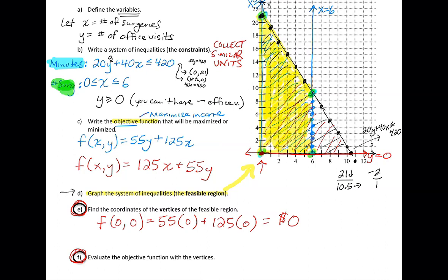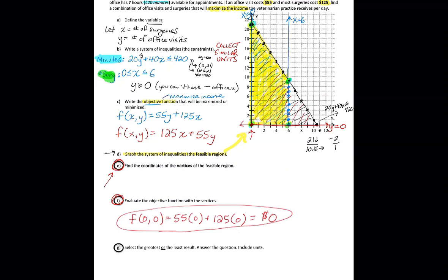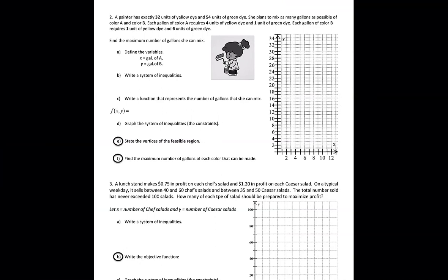As you try this, I'd like you to do question E — figure out those vertices and then evaluate the objective function at each. Then do question F to actually answer the question: how many surgeries and how many office visits should Dolores schedule in order to maximize the income of the office? On E you'll state the coordinates; on F you'll evaluate; and on G you'll select the greatest result, answer the question, and include units. Thanks for watching this video. In the next video we'll look at page two, which has two more linear programming word problems.